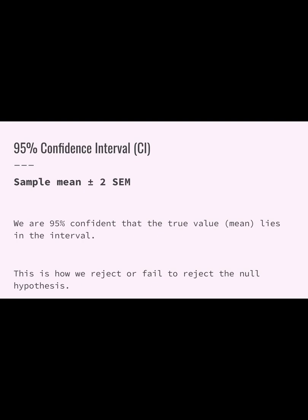We use the sample mean to calculate what we call a 95% confidence interval. The interval is a range of numbers: we take our sample mean and go up two standard errors of the mean and also go down two standard errors of the mean. The bottom of the interval is the lower bound and the top is the upper bound. This interval indicates that we are 95% confident the true mean lies within that interval. We use these intervals to determine whether we reject or fail to reject the null hypothesis and whether we have statistically significant evidence.